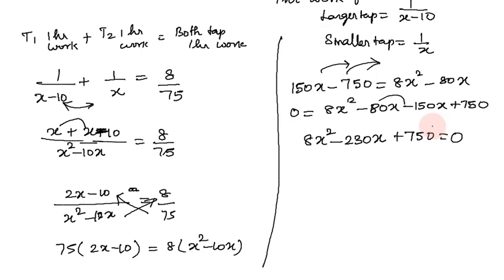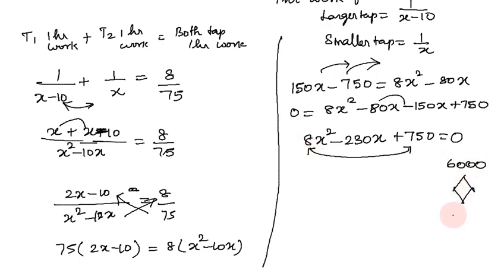Now we factorize. Multiply 8 by 750 to get 6000, and we need two numbers that multiply to 6000 and add to 230.